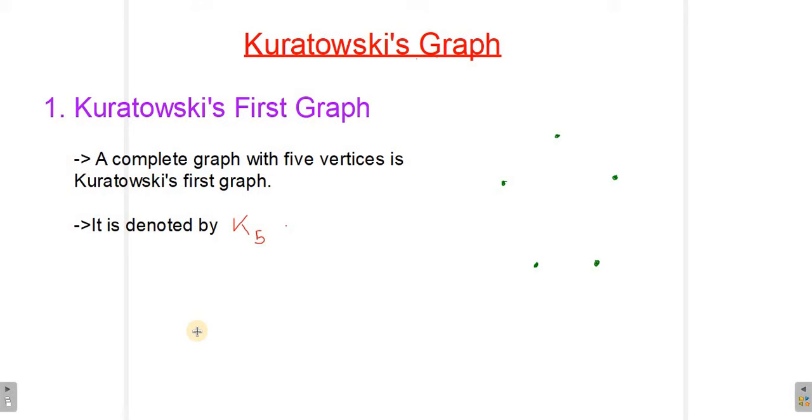Kuratowski's first graph is as simple as a complete graph with five vertices. So what is a complete graph? A complete graph is nothing but a graph in which we have to connect a vertex to all other vertices. Let's take an example to understand exactly what Kuratowski's first graph is.